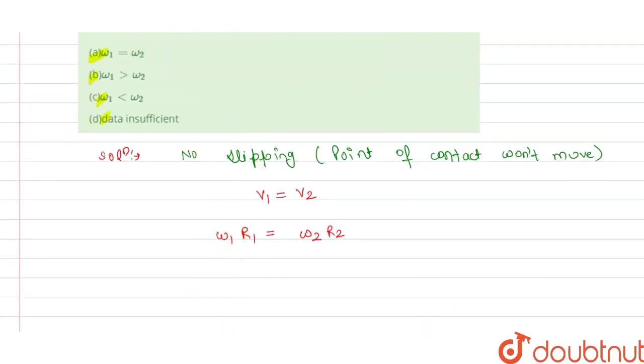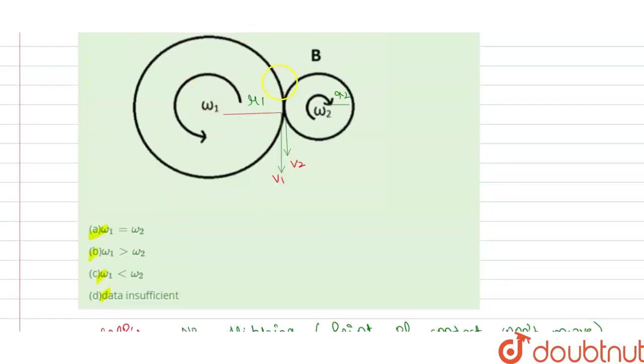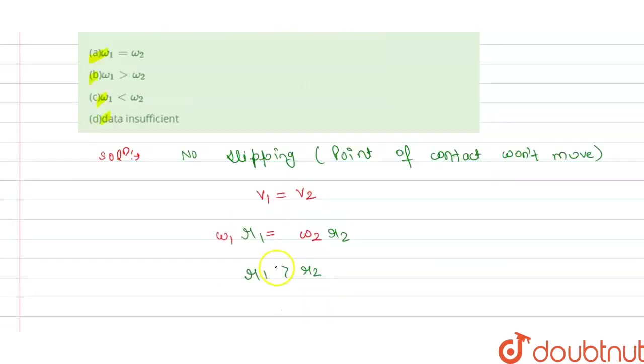From the figure we can say that r1 is greater than r2. The radius of this disc is greater than the radius of the second disc.